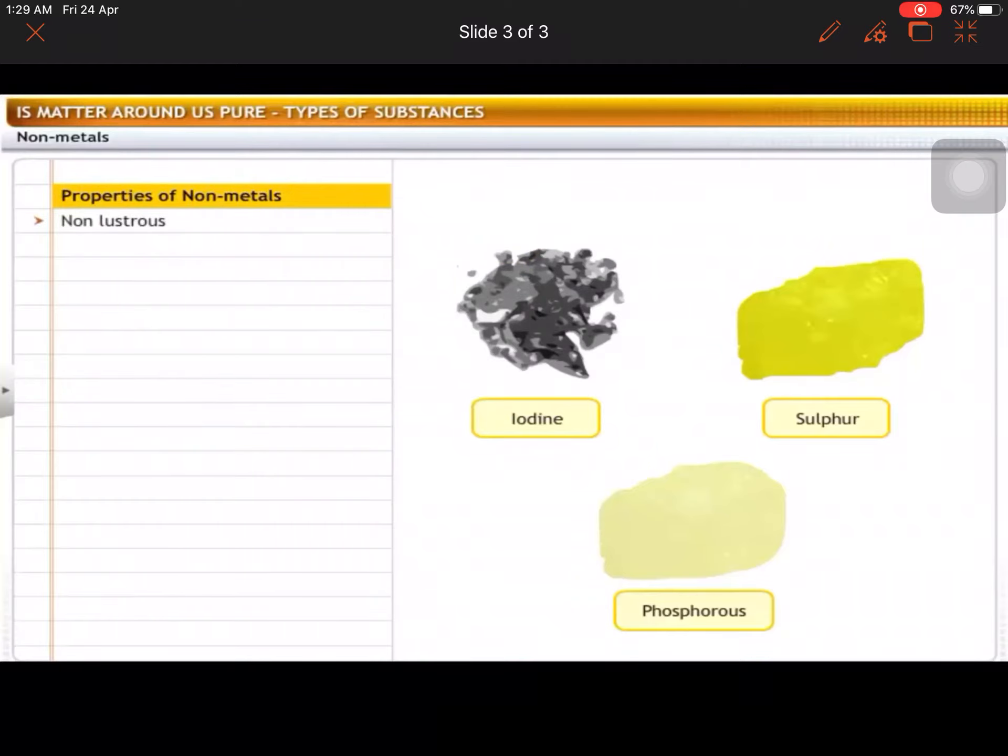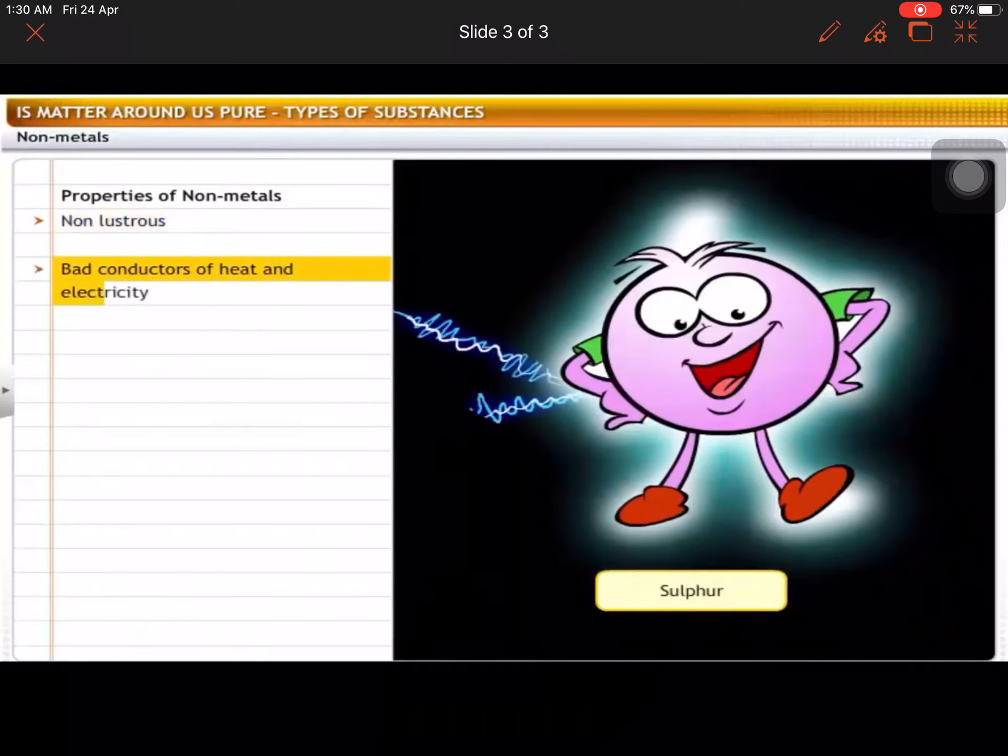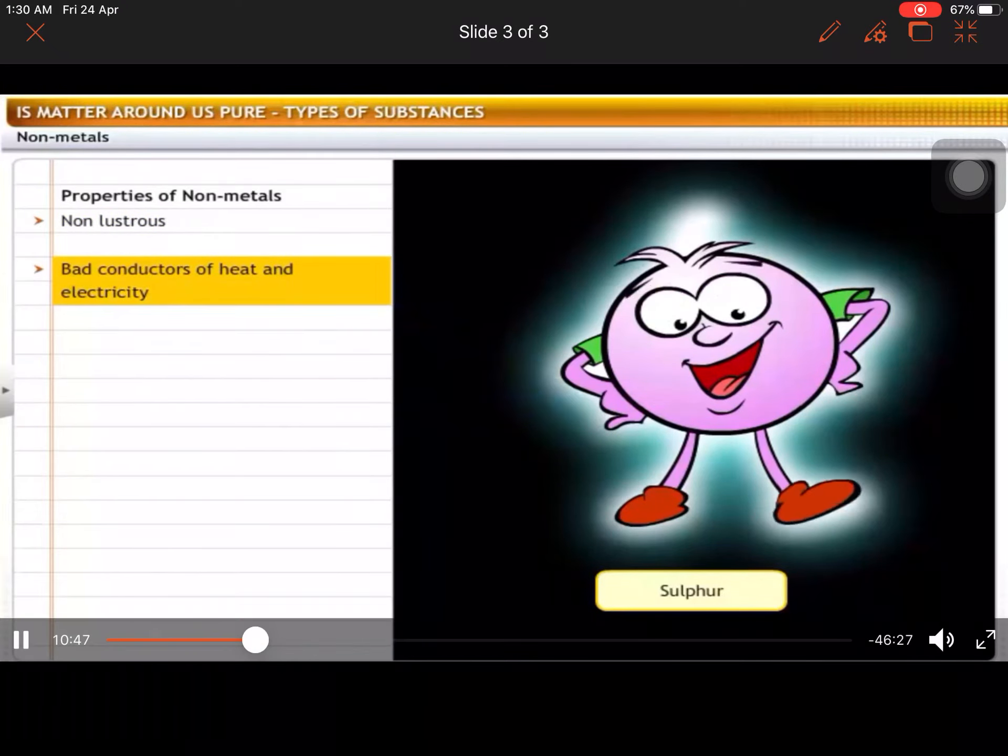Non-metals usually show some or all of the following properties: They do not exhibit luster. Non-metals are bad conductors of heat and electricity. They do not contain free electrons. Now a question will be asked about non-metals: Why do they say bad conductors of heat and electricity?